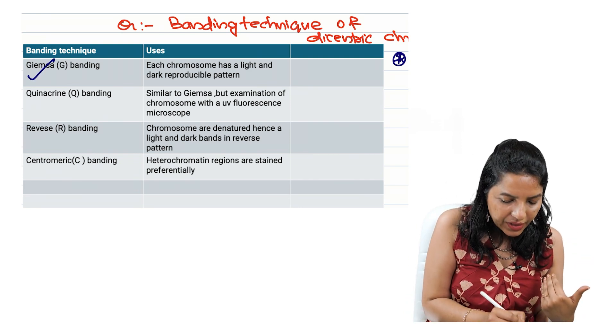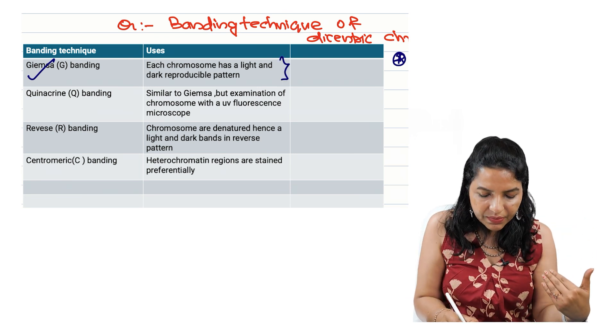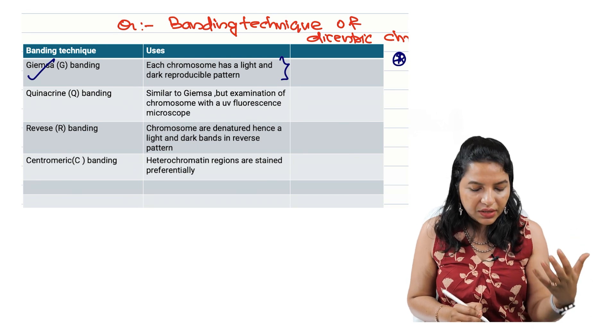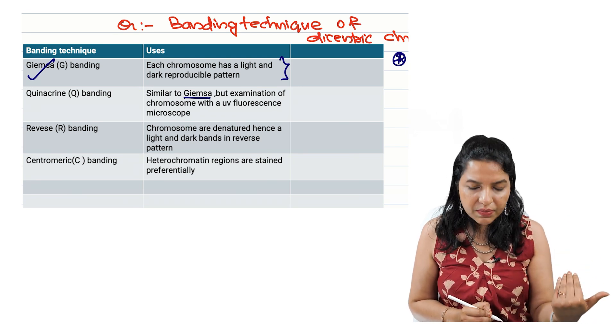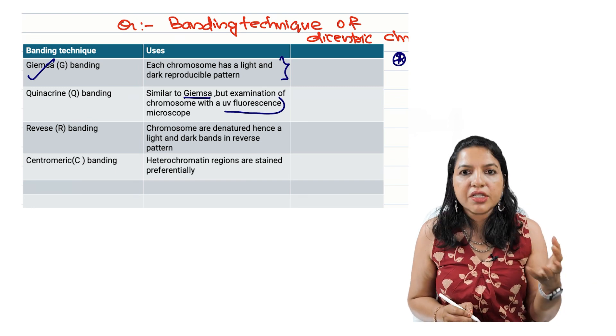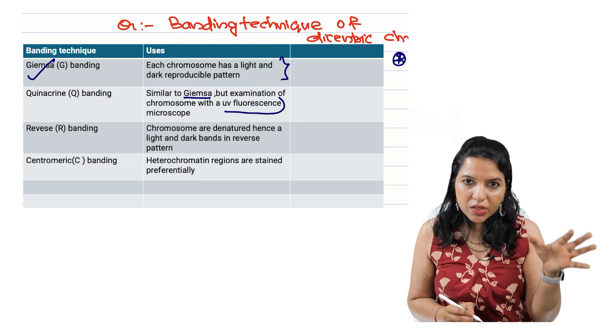So the banding technique number one is the conventional Giemsa staining where we are getting the reproducible dark and light bands. Then Quinacrine is similar to Giemsa where we are getting dark and white bands but we are observing it not under light microscopy, we are observing it under UV fluorescence microscope.